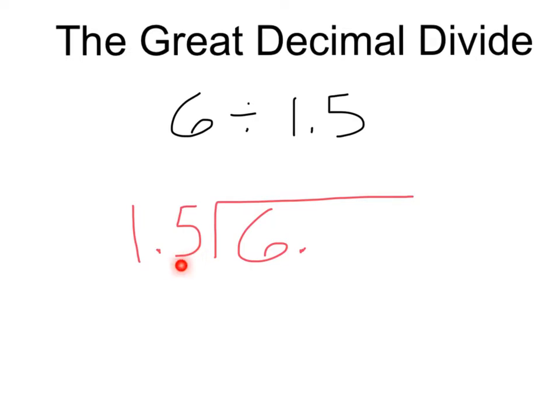First off, you want to make sure your divisor, the number that's going into the other number, is written without a decimal. So what we want to do is we want to move this decimal place over one. So I'm going to take this and move it over one space.